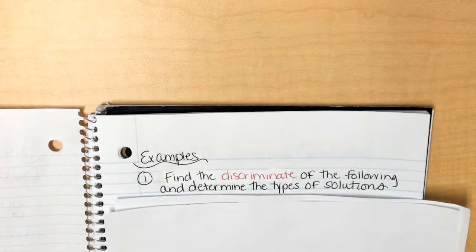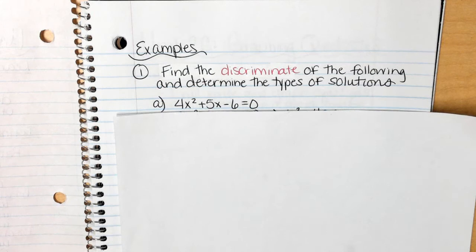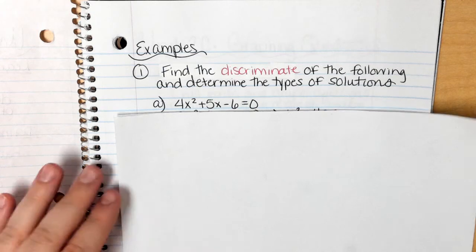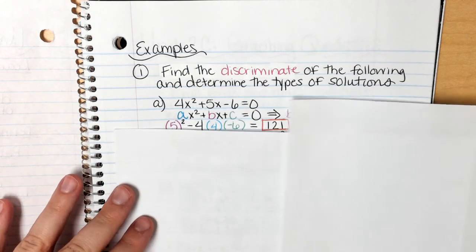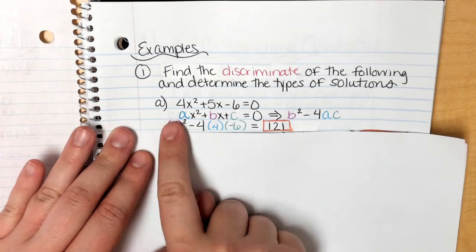Alright, so we are going to find the discriminant of the following types. So I do have four because each one of them is one of the different types on the table. So this one, we've got 4x squared plus 5x minus 6. I'm going to use the quadratic formula. Actually, I guess I'll just show you the whole thing.